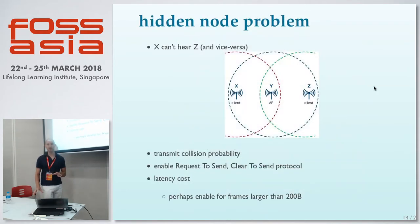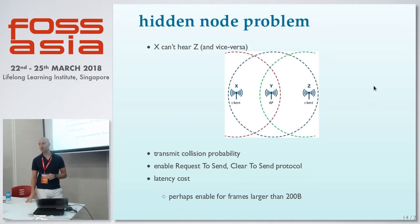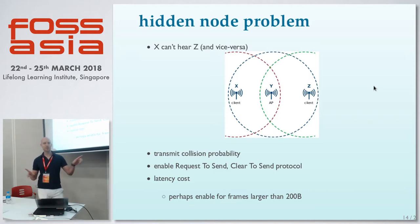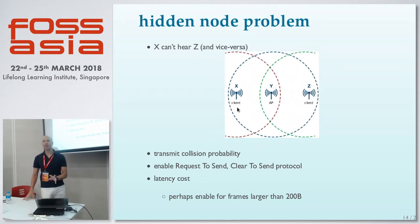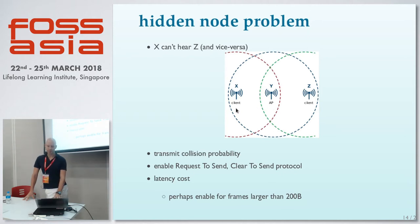One of the other key issues in Wi-Fi is the hidden node problem. Say you have an access point and two phones or laptops at different ends of the space. Typically clients are around 13 milliwatts, while an access point is maybe 100 milliwatts or higher at 5GHz. So clients X and Z can't hear each other.